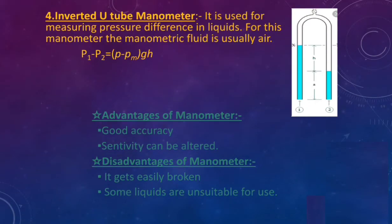The inverted U-tube manometer is used for measuring pressure differences in liquids. The manometric fluid is mostly air, and the space above the fluid in the manometer is filled with air to adjust the fluid level. The pressure difference is determined by equating pressures at level x–x': P1 − P2 = (ρ − ρm)gh.